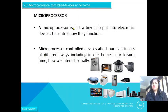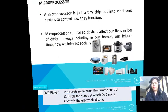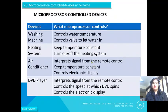A microprocessor is basically just a tiny chip that is put into electronic devices to control how they function. Nowadays we have many devices in our home that are microprocessor controlled, and these devices affect our lives in lots of different ways, including our leisure time and how we interact socially.